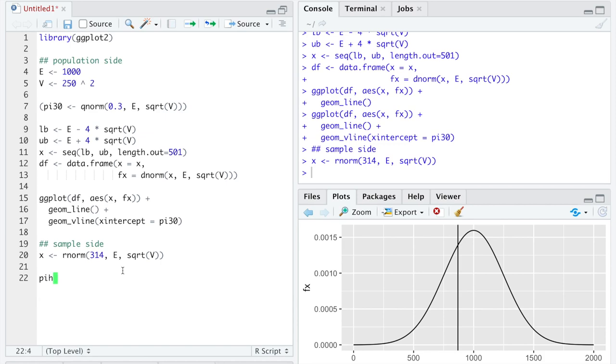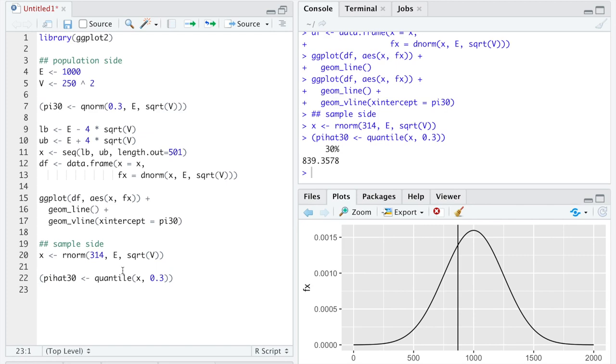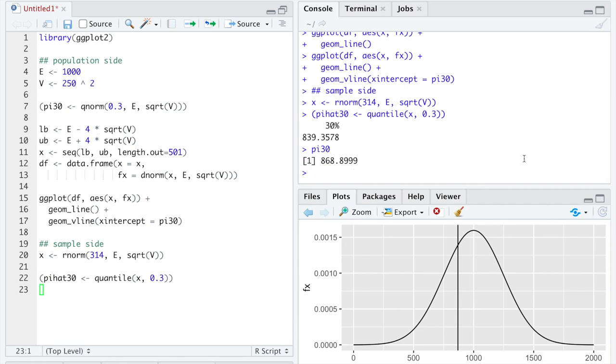then we could estimate π 30, maybe by calculating π hat 30, by calculating the quantile of x corresponding to the 30th percentile. And again, I will wrap this expression in parentheses so it stores and prints at the same time.